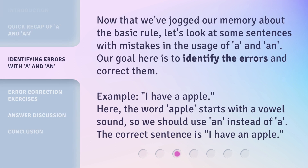Now that we've jogged our memory about the basic rule, let's look at some sentences with mistakes in the usage of A and AN. Our goal here is to identify the errors and correct them. For example: 'I have a apple.' Here, the word 'apple' starts with a vowel sound, so we should use AN instead of A. The correct sentence is: 'I have an apple.'